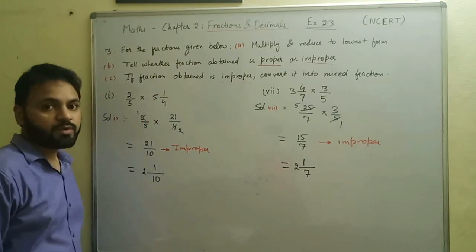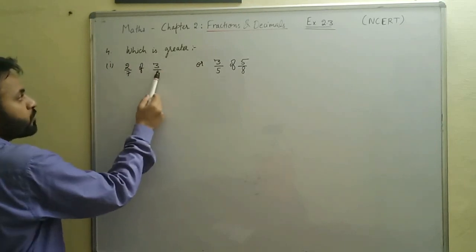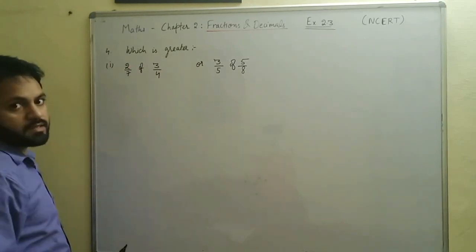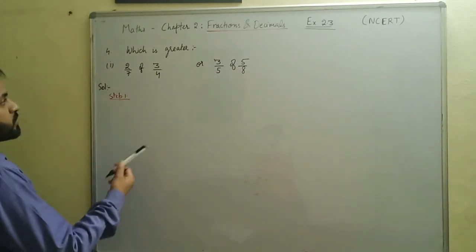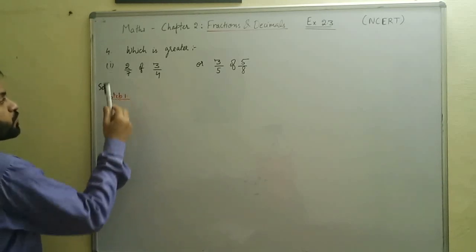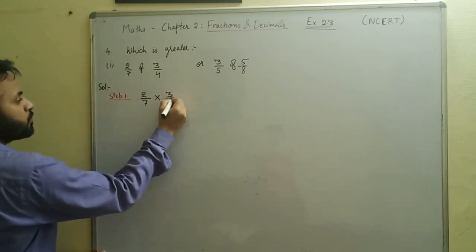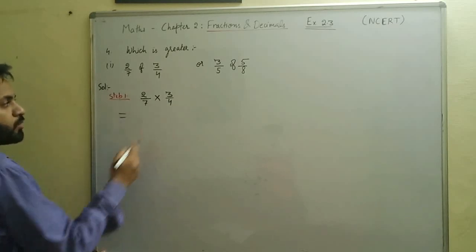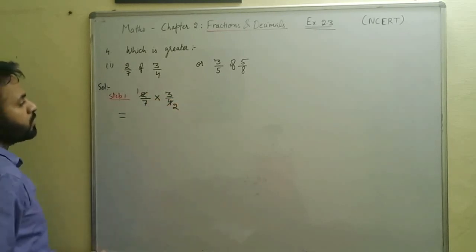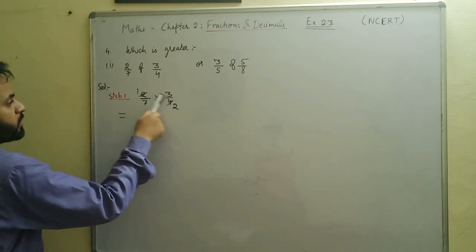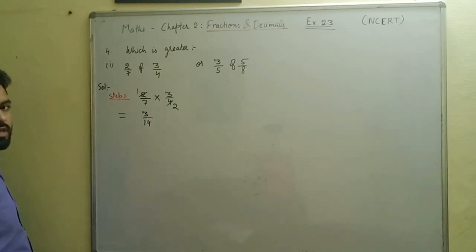Let's move to question four, where we have to tell which is greater: two sevenths of three by four, or three fifths of five by eight. In step one, we multiply two by seven and three by four. The two and four are divisible — two ones are two and two twos are four — so we get one times three over seven times two, which is three by fourteen.